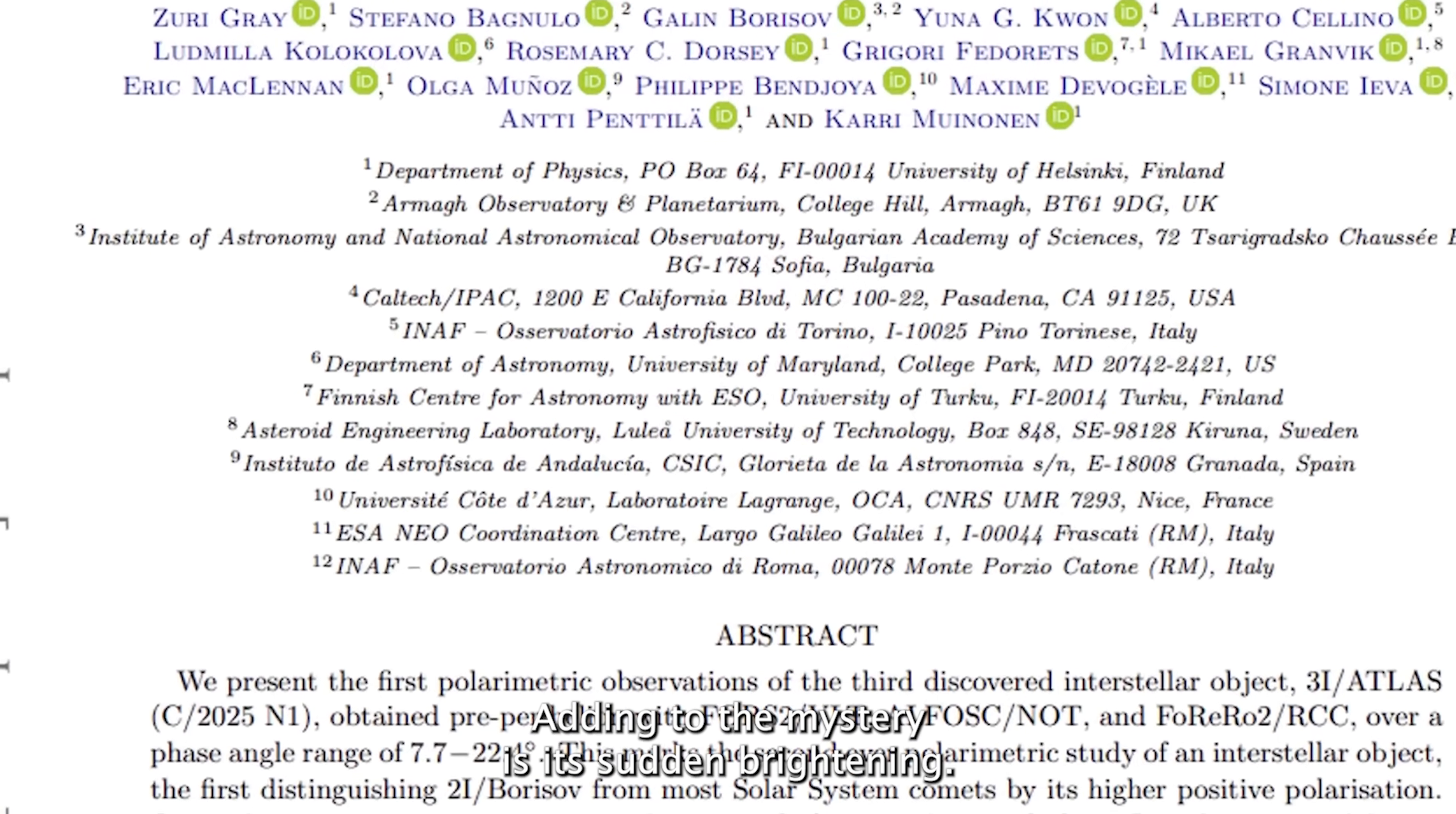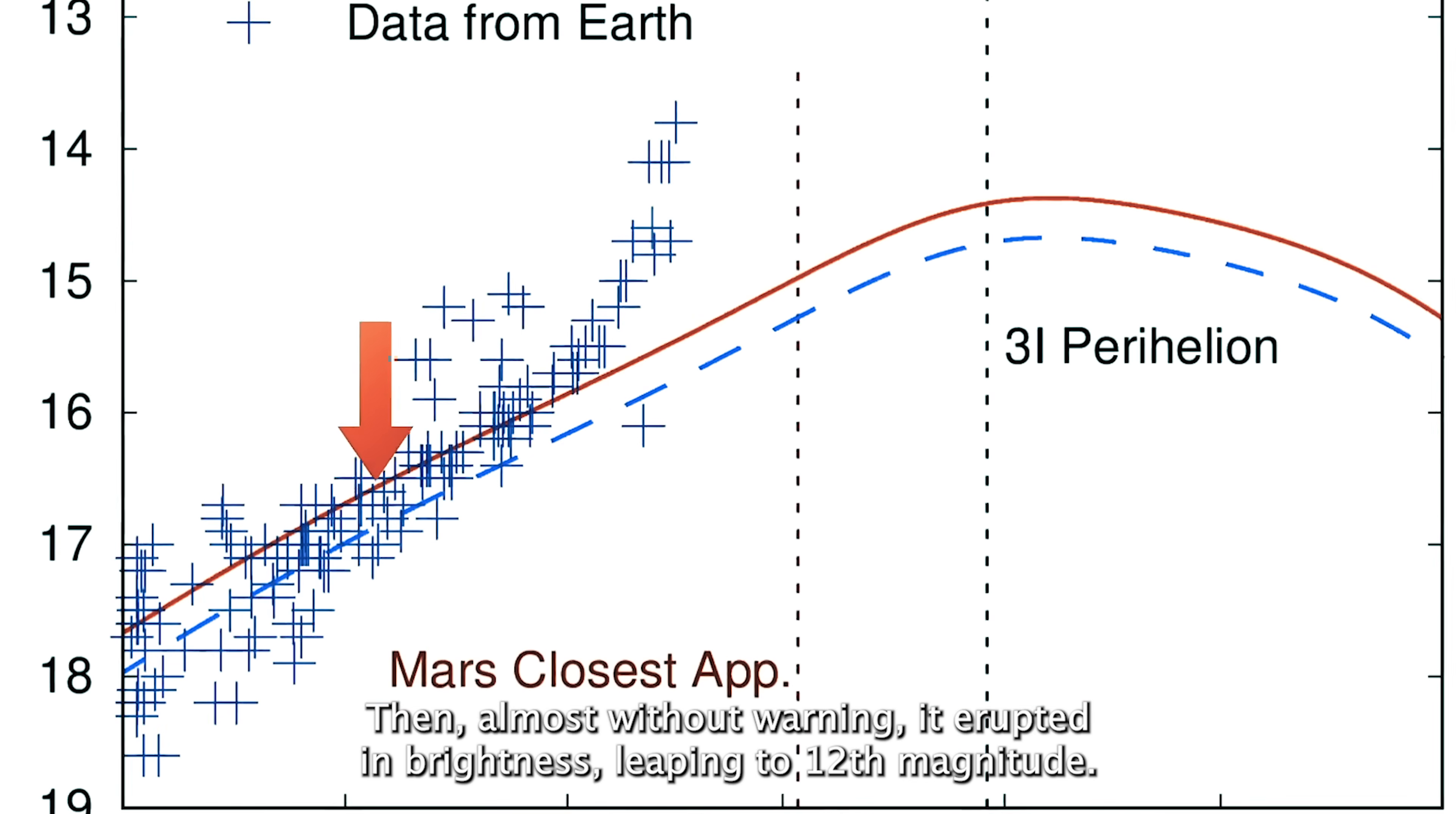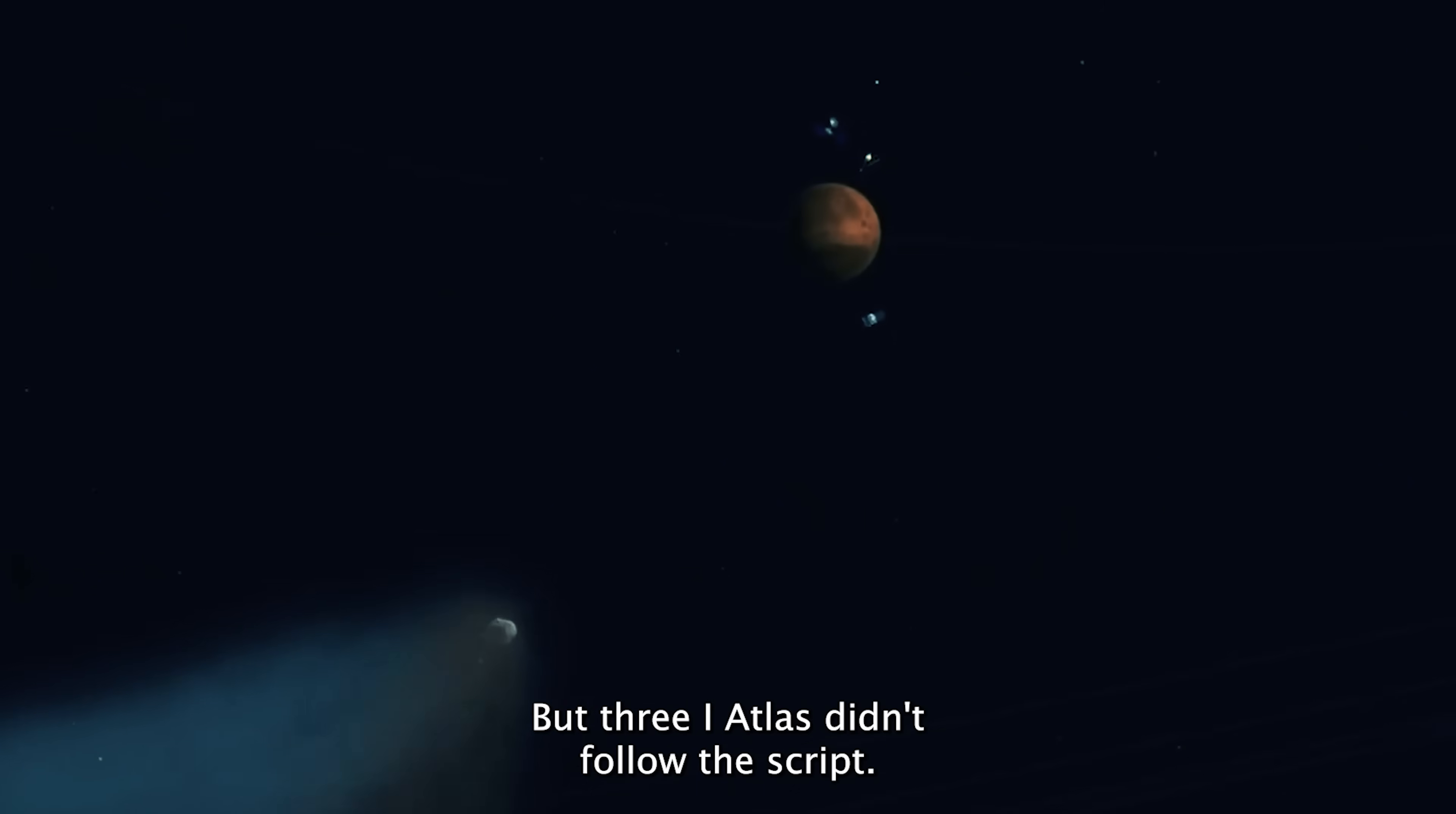Adding to the mystery is its sudden brightening. When 3i Atlas was first discovered, it was an extremely faint 18th magnitude object, barely visible even through powerful telescopes. Then, almost without warning, it erupted in brightness, leaping to 12th magnitude. This dramatic flare-up has no clear explanation. Ordinary comets grow brighter gradually as sunlight warms their icy surfaces and releases dust and gas. But 3i Atlas didn't follow the script. Its sudden glow looked as if something unusual was happening inside or around it.